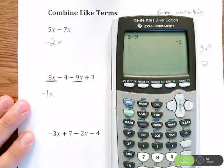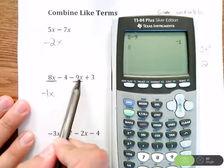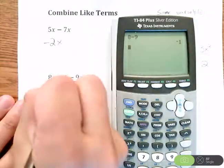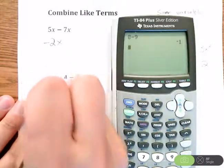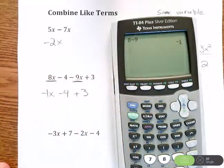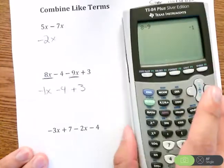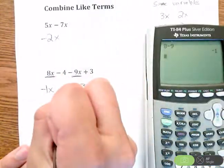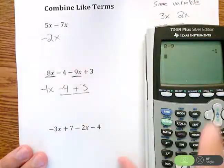Because this is a plain old positive 8, it's plain old minus 9. 8 minus 9 is negative 1, don't forget the x. Okay, so I combine the 8x then the minus 9x. I still haven't touched the minus 4 or the plus 3, so I'm just going to rewrite those right below it.